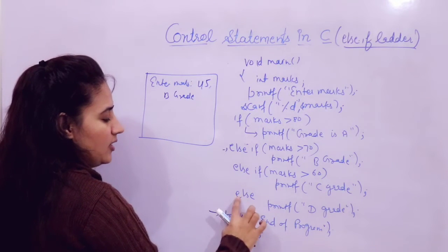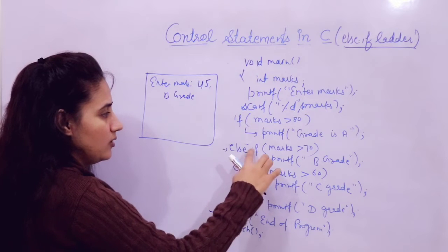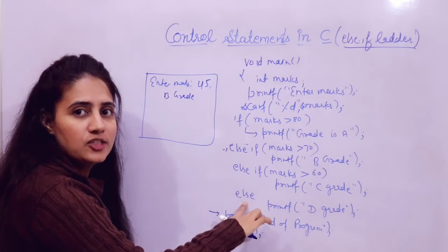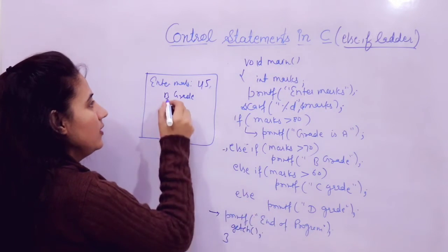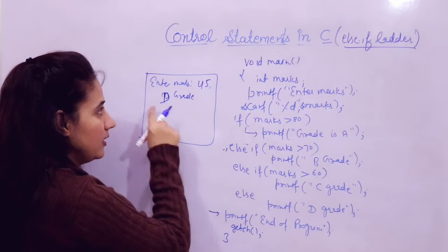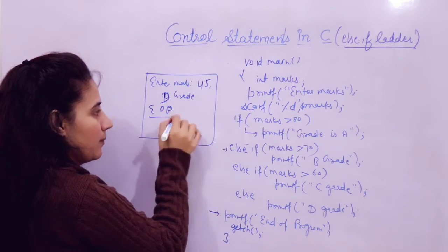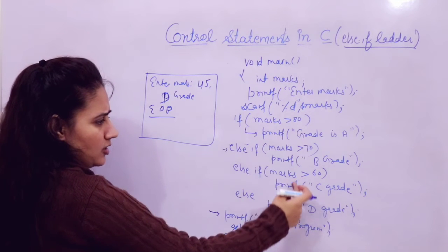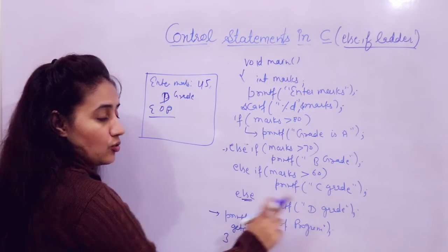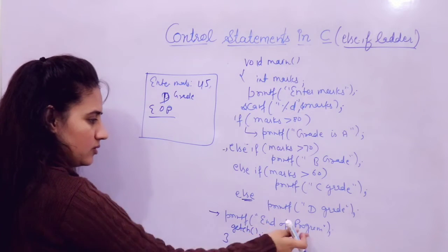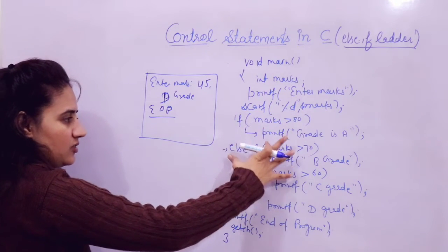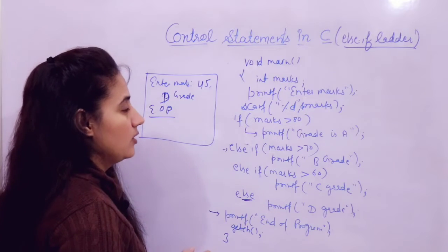Finally, the else block: if none of the conditions is true, this else block would be executed. So it will print D grade. And after that it will print 'end of program'. So if none of the conditions is true, this else block would be executed, and after that whatever statements are not part of the else-if ladder would be executed. If you put a semicolon after else-if, it will give an error — you can check that.